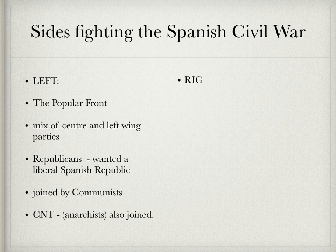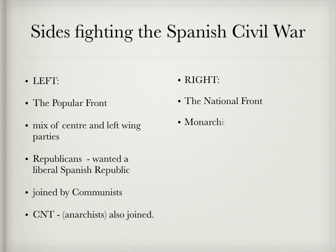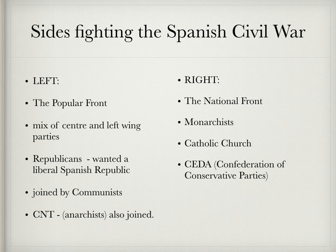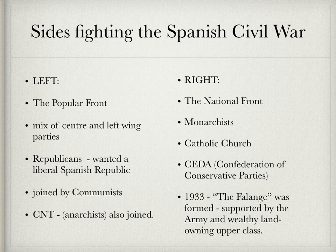On the right side, we have what's known as the National Front. The Nationalists — the National Front — include monarchists in support of the monarchy and those in favor of the Catholic Church. We see a confederation of conservative parties known as CEDA. The leader of CEDA had fascist leanings and was really inspired by Hitler. By 1933, the Falange Party was formed, largely supported by the army and wealthy land-owning upper class.